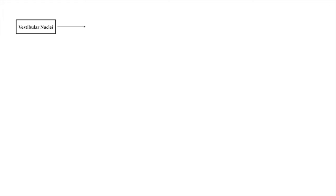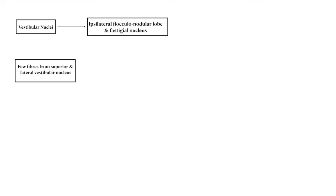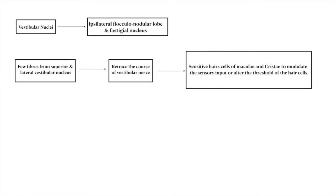Some fibers from the vestibular nuclei are projected to the ipsilateral flocculonodular lobe and the fastigial nucleus. A few efferent fibers from the superior and lateral vestibular nuclei retrace the course of the vestibular nerve and reach the sensitive hair cells of the maculae and cristae to modulate the sensory input or to alter the threshold of the hair cells.